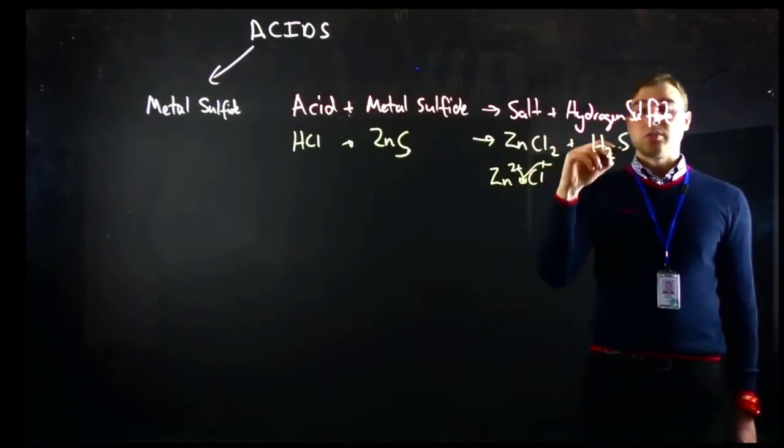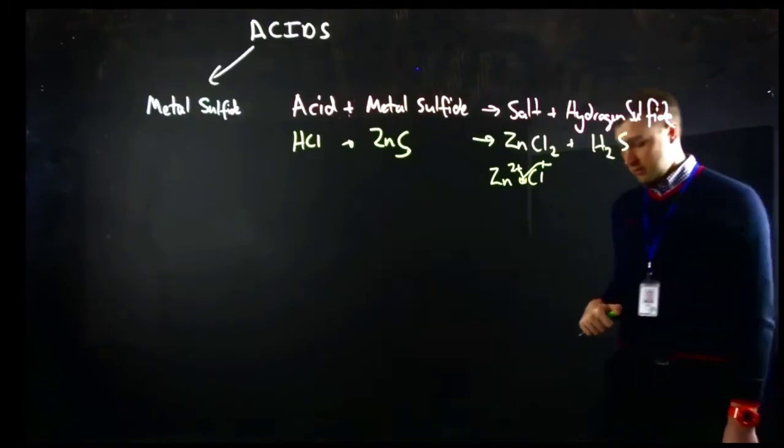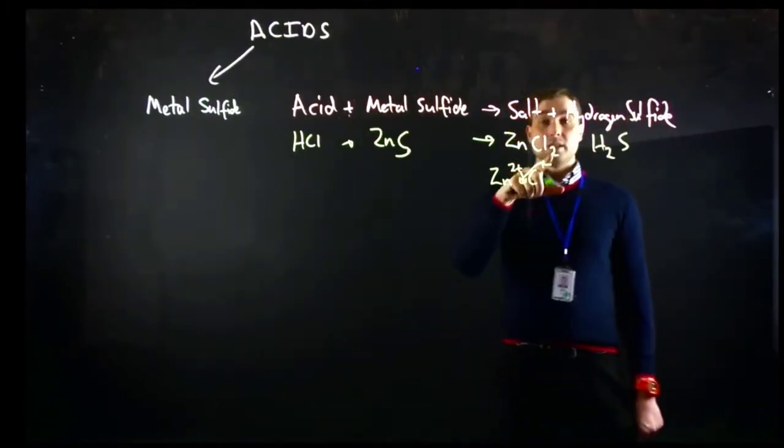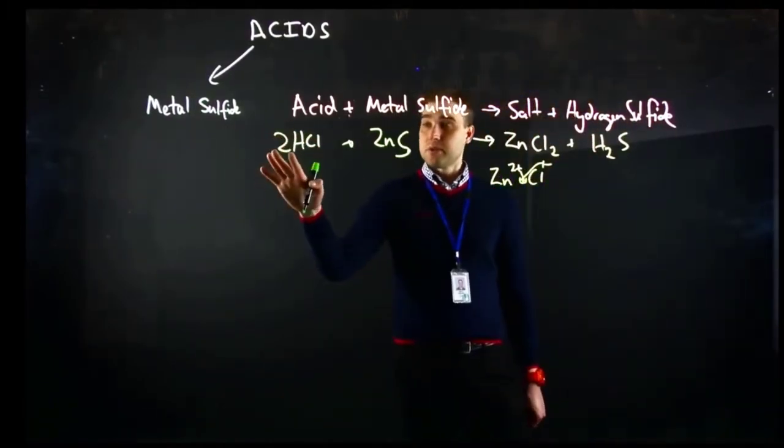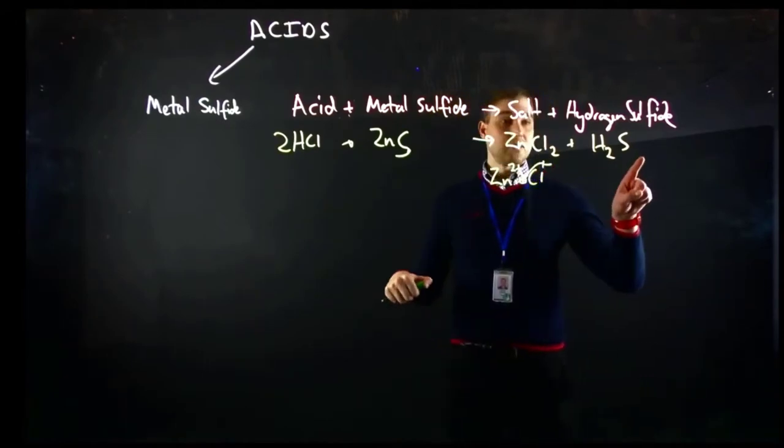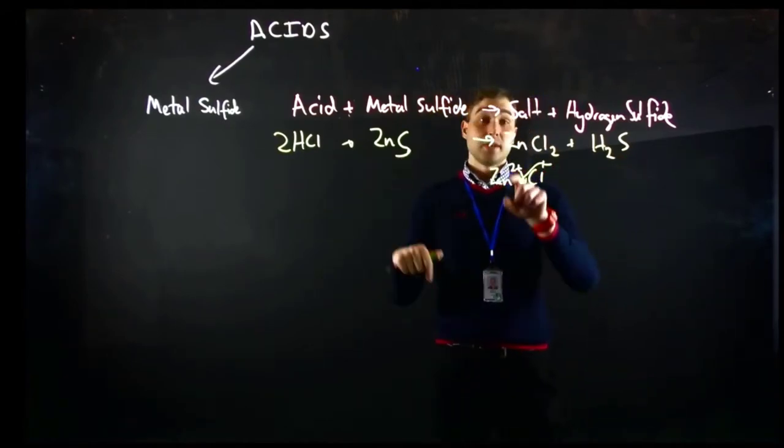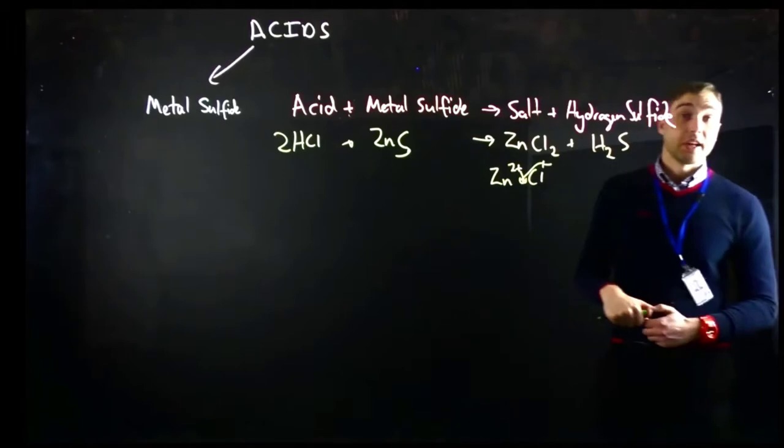Now let's check balancing. We've got 1 chlorine, 2 chlorine, we need to double that one. So 2 hydrogens, 2 hydrogens, 1 sulfur, 1 sulfur, 1 zinc, 1 zinc, 2 chlorine, 2 chlorine, so now that's balanced.